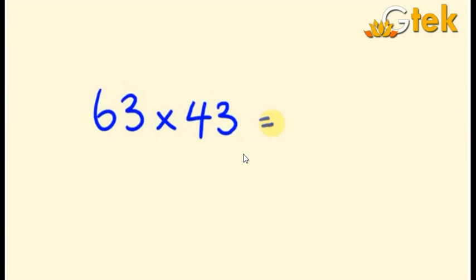My question is 63 into 43. You all know that multiplying by 5, 25 or 125 is quite easier, or multiplying by a single digit is easier. Now I have taken a double digit number, and in the normal way you will take this digit and multiply the entire number, then take this digit, ignore the unit place, multiply the entire number, and add up your solutions to find the value.